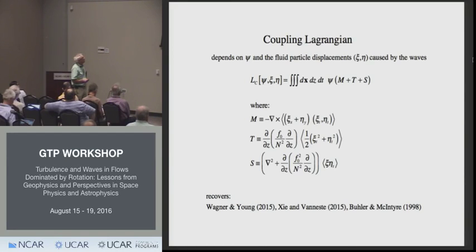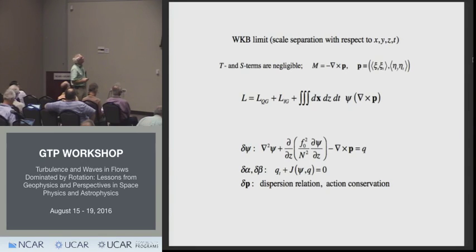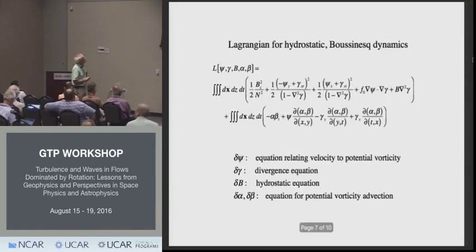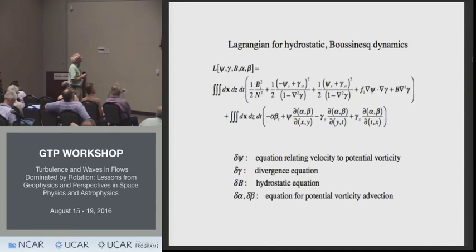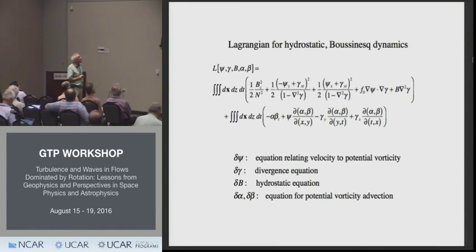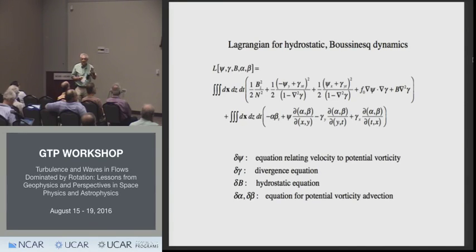The starting point was what I believe is a newly discovered Lagrangian for the hydrostatic Boussinesq equations. It depends upon five variables: the stream function psi, gamma whose time derivative is the velocity potential, a Bernoulli function, and two labels for the potential vorticity. Taking the five equations from requiring this to be stationary with respect to those five variables gives equations precisely equivalent to the three-dimensional hydrostatic Boussinesq equations.